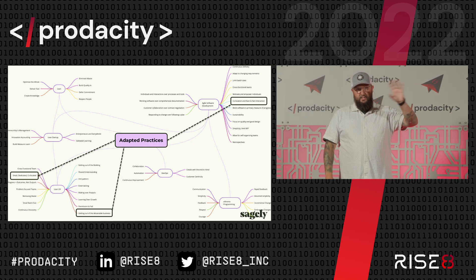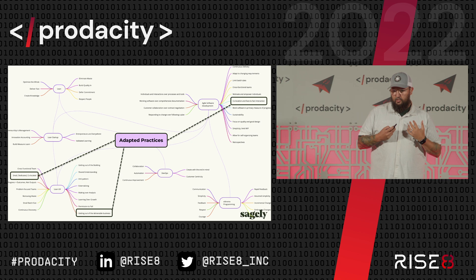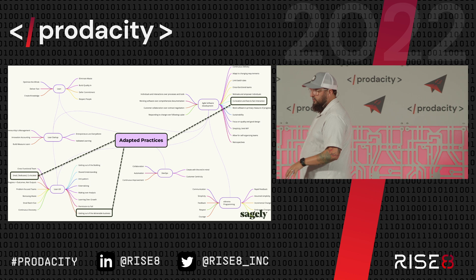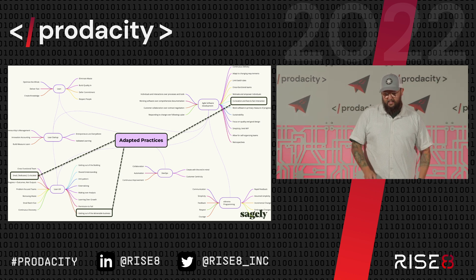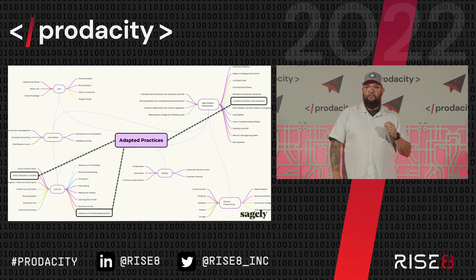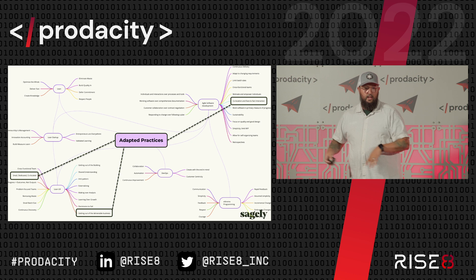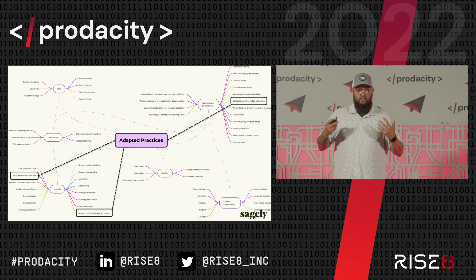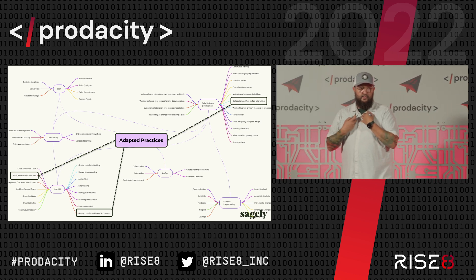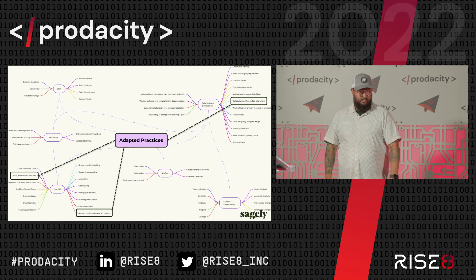I wanted to give an example of practices we've adapted. In Lean UX principles, it mentions small, dedicated, co-located teams — those were written pre-pandemic, so I don't know if there would be an update there. It also mentions getting out of the deliverables business — the idea being not to spend a ton of time documenting design research so you stay focused on the product being delivered. In our case, with a fully remote team, asynchronous communication, and non-linear work days, doing a little bit more of that documentation is something we've adapted as a team to meet our contexts and constraints.